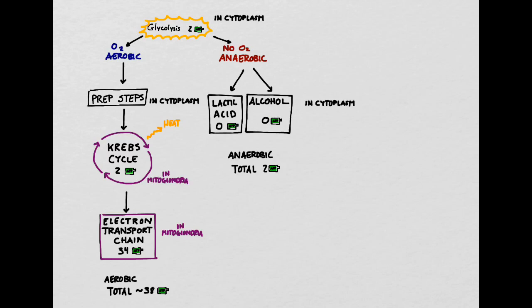There are two major types of respiration: aerobic and anaerobic, and they depend on whether or not there is oxygen present in the environment. Both types of respiration begin with glycolysis in the cytoplasm of a cell, and then, depending on whether there is oxygen present, you either go into anaerobic or aerobic respiration.